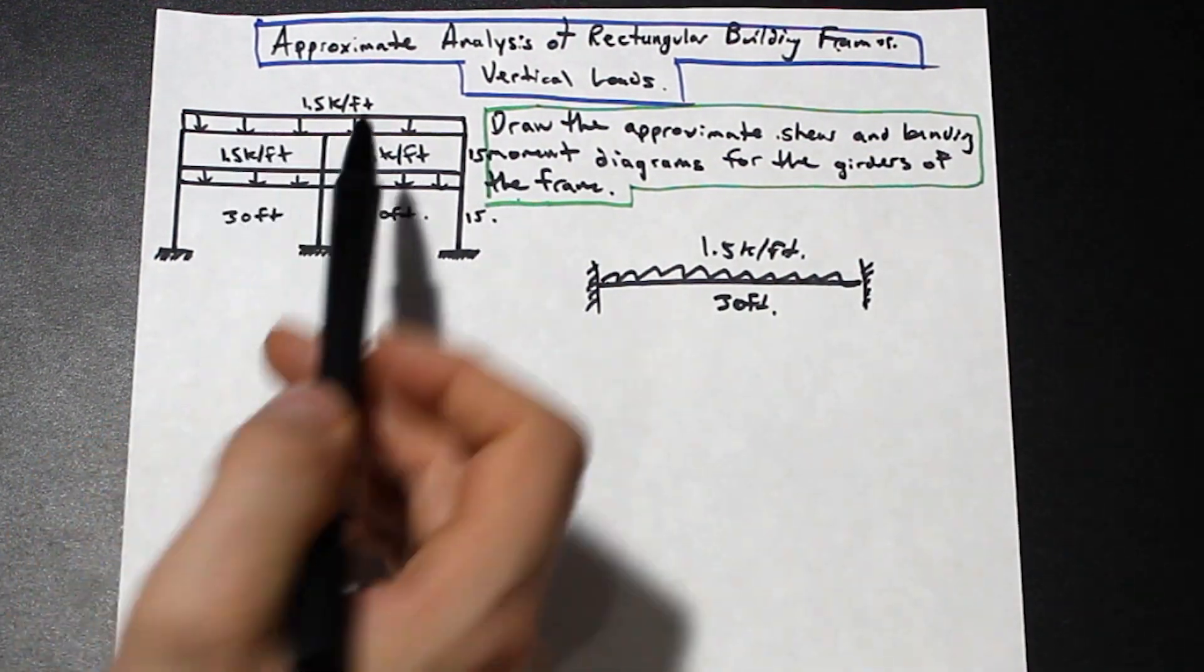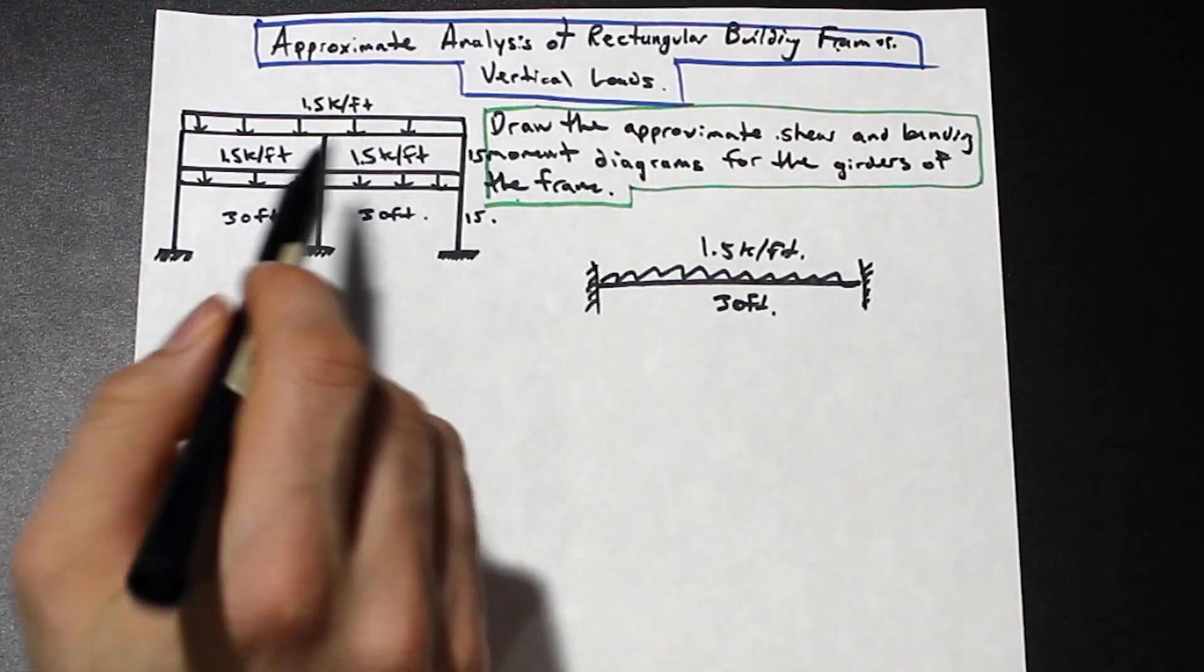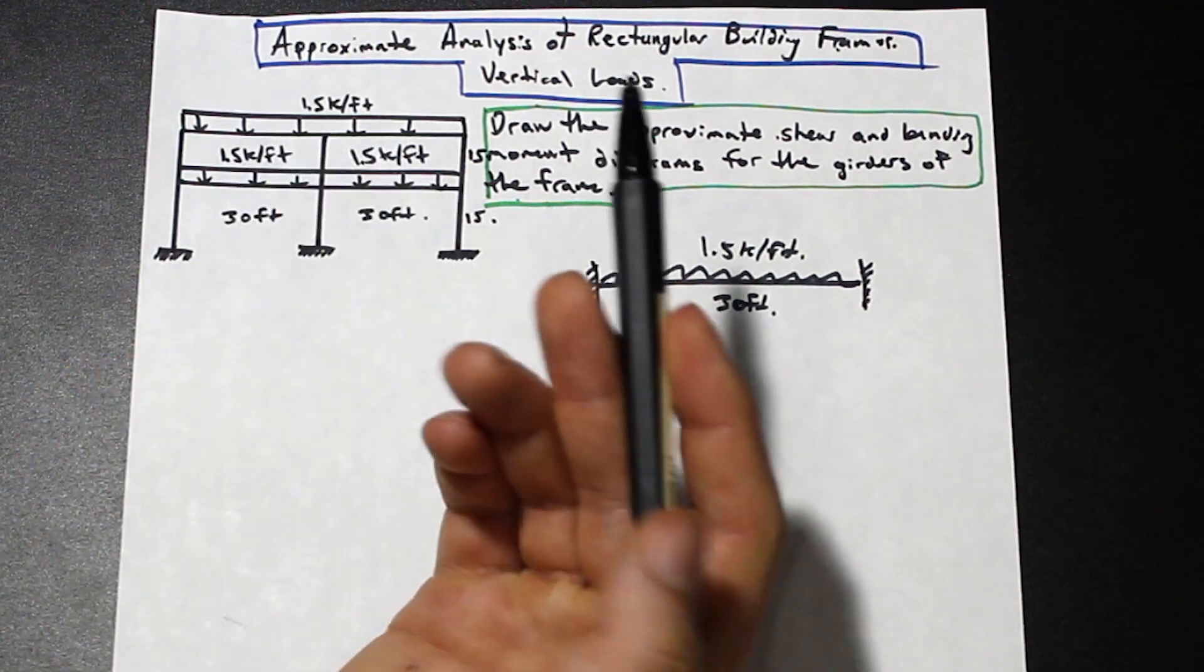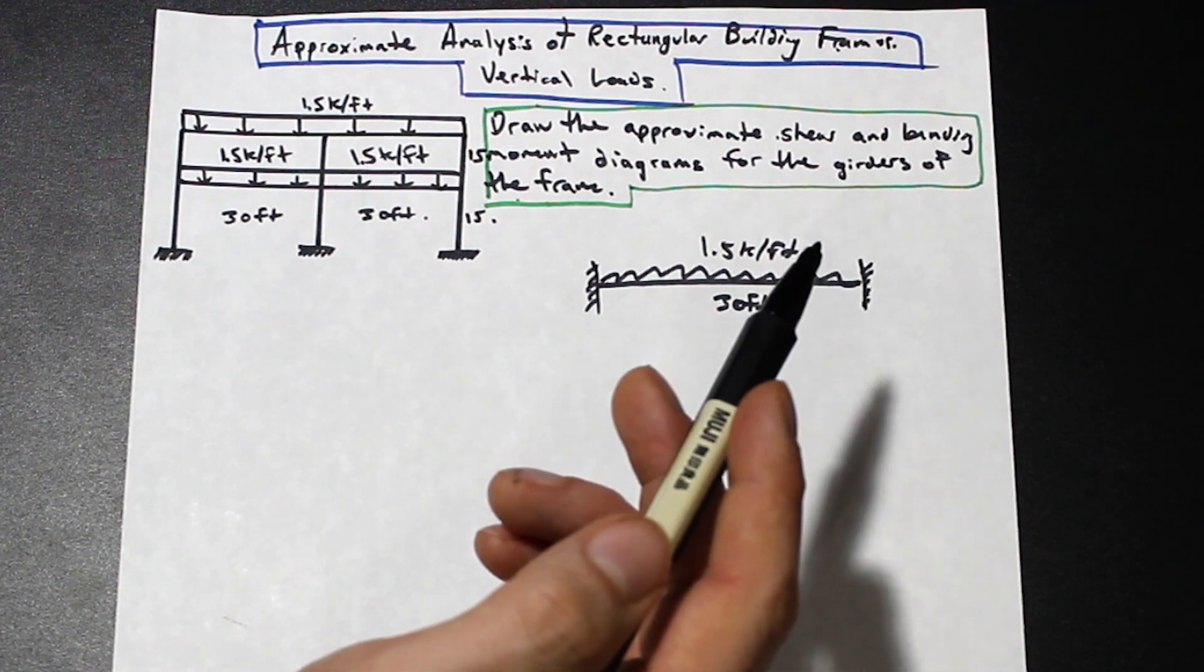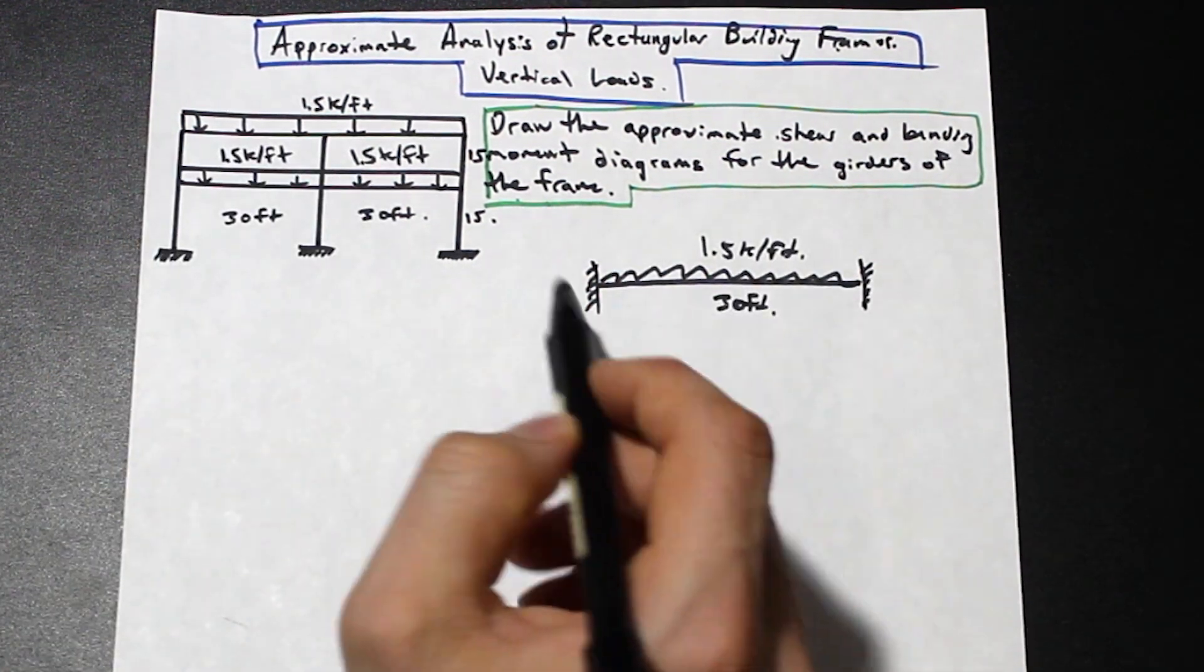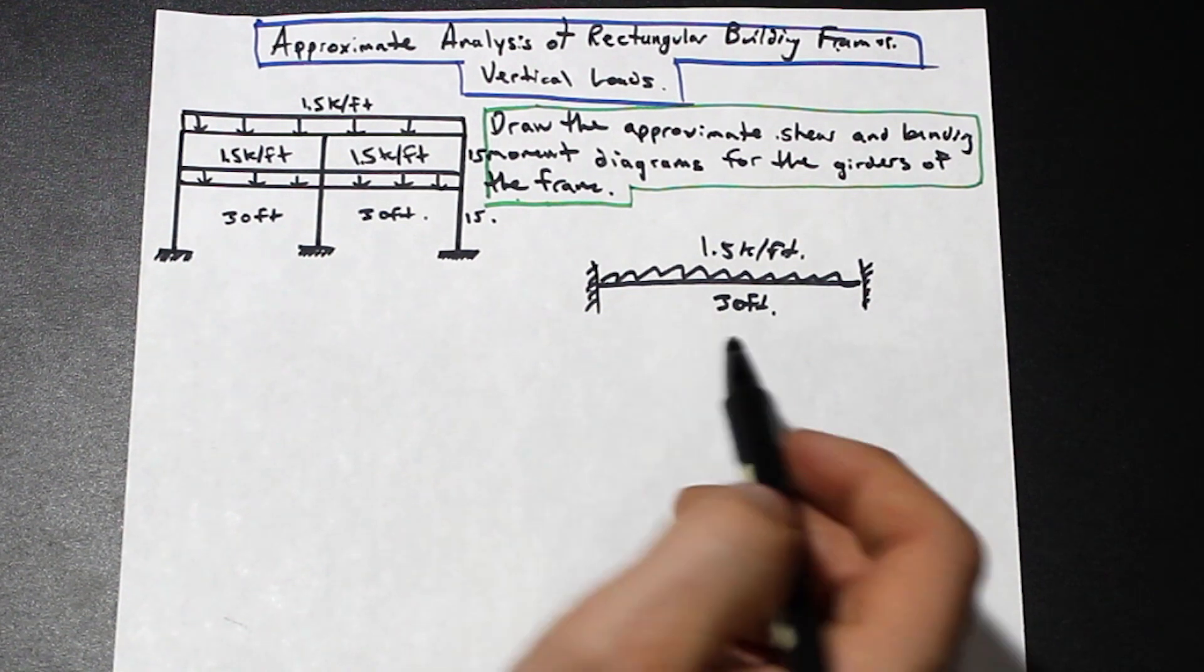Because as you can see right now, the degree of indeterminacy of this structure is just simply three times the number of girders. So we have four girders. So it's actually indeterminate to the 12th degree. So we can't really solve this by hand. It's too complicated.